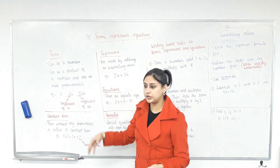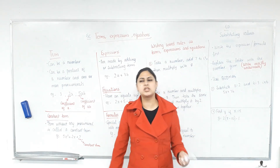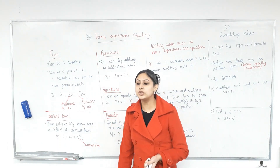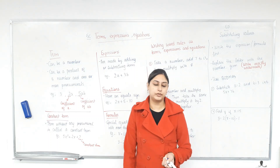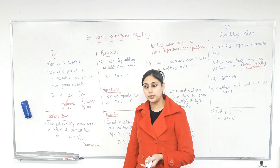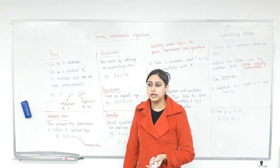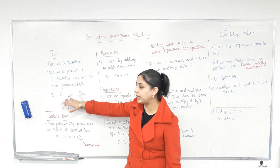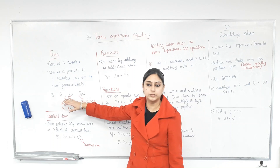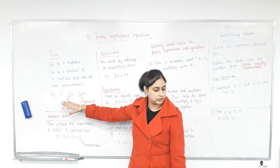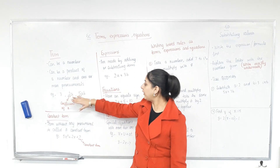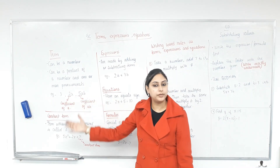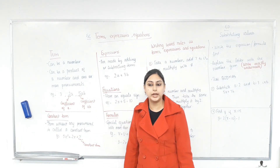A coefficient is the number part of a term. So if a term has pronumerals, the number part is the coefficient. For example, 2A — the 2 is the coefficient. 5AB — what's the number multiplied to AB? 5. So 5 is the coefficient of AB.